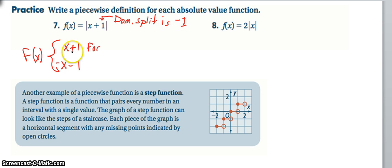So I write down the original function x plus one, and that is going to be for all x values greater than or equal to negative one. And then I write down the opposite of the function. So negative x minus one for all x values that are less than negative one.